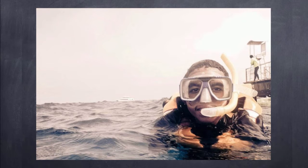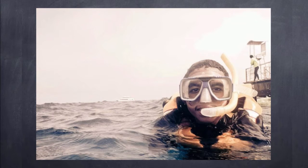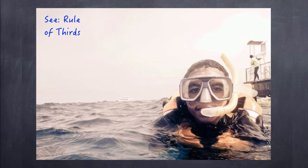This time we're going to talk about the compositional technique negative space. That's essentially just where you have a large amount of your image with basically nothing in it. Now this often does require use of other techniques and other compositions. As you can see here I've got this big expansive open sky, and to do so I have positioned my main subject off and down into the bottom right corner.